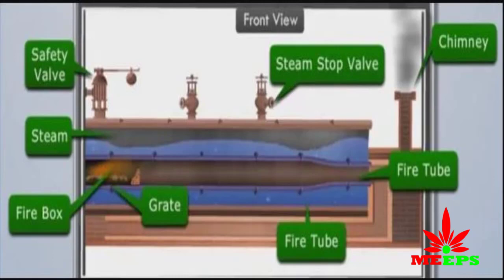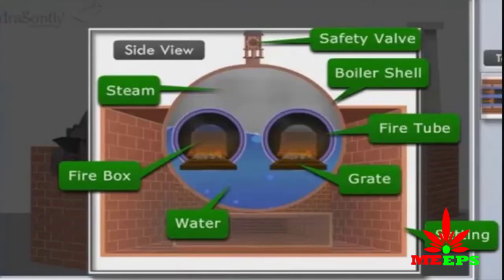Main parts of the Lancashire boiler include: safety valve, water level indicator, pressure gauge, steam stop valve, feed check valve, blow-up valve, manhole, fusible plug, grate, fire tube, and fire bridge. Accessories used in the Lancashire boiler include: economizer, air preheater, superheater, and feed pump.